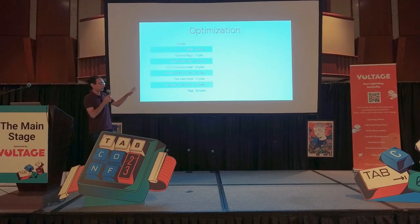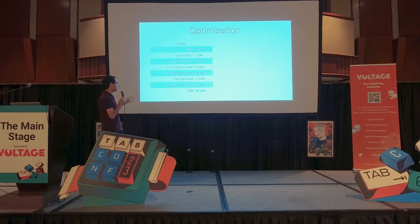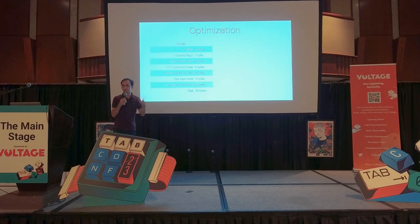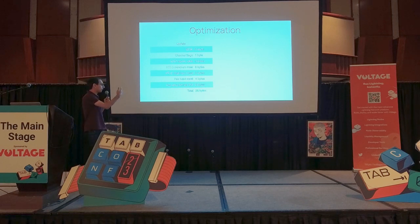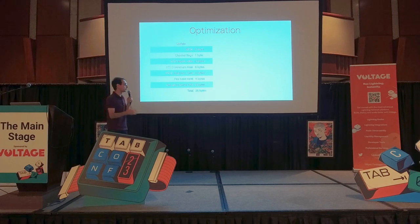The big thing to address next is the channel update. The channel update really is the cornerstone of communicating information about a channel in Lightning. This is where all the nitty-gritty details are contained — the expiry delta, the minimum msat, the maximum msat, the base fee, the proportional fee. Even though it's only 35 bytes, if you're working with 73,000 channels and therefore at least 146,000 channel update messages, it builds up quite a bit.